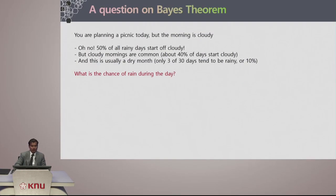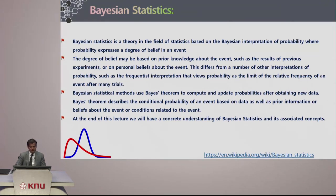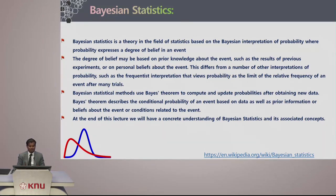Finally, I leave a practice question for you to try — a simple question related to Bayes theorem where you have to find the chance of rain during the day. Bayesian statistics is a theory in the field of statistics based on the Bayesian interpretation of probability, where the probability expresses a degree of belief in an event.